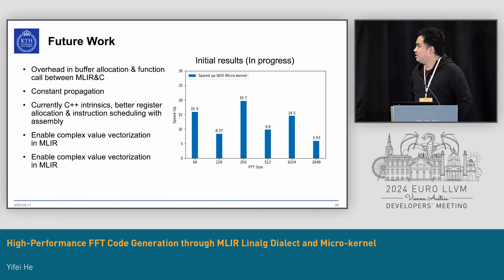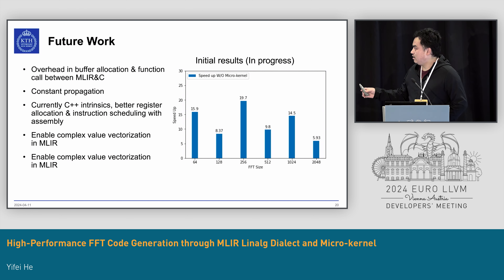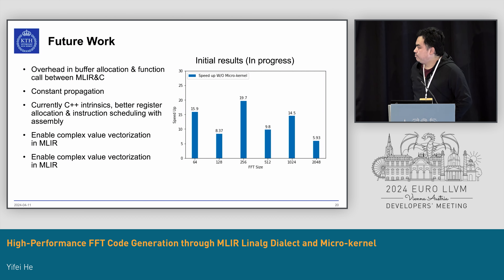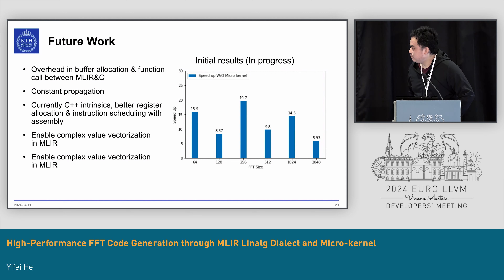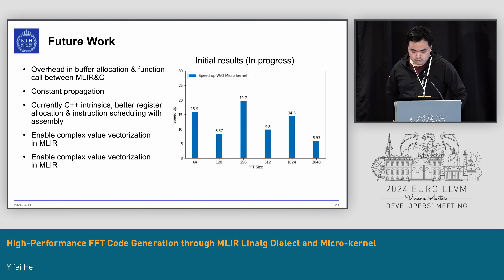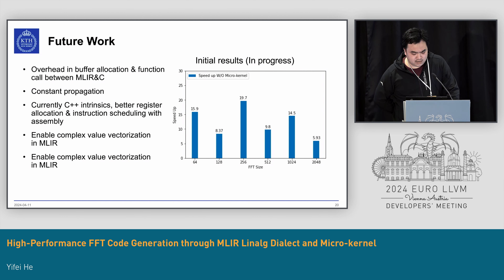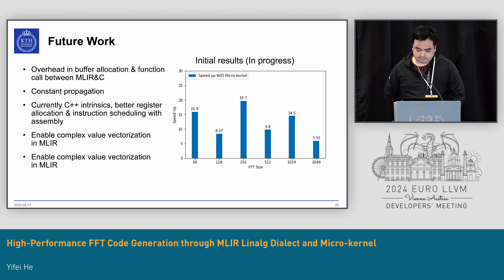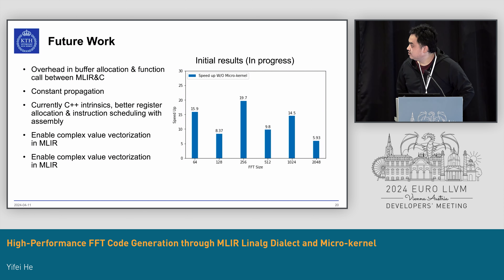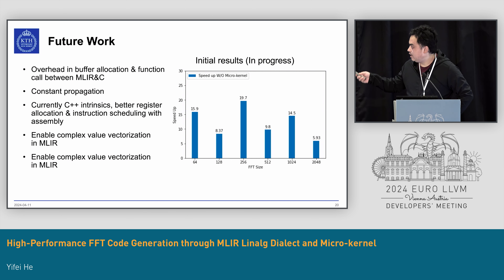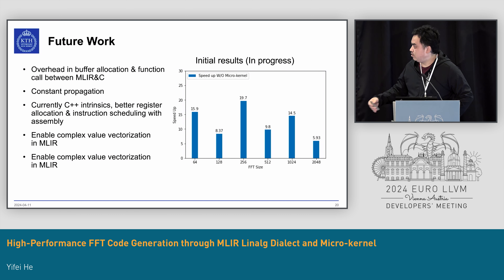This is work in progress, so we only have initial results. We didn't compare with other FFT libraries — we only compared our microkernel implementation with code generation without the microkernel, which went through the MLIR and LLVM vectorizer pipeline. We can see speedups over different sizes, and for some sizes it's over 10x. There is still a gap compared with state-of-the-art FFT libraries. We have found some overhead that hasn't been optimized yet, such as buffer allocation and function call overhead between MLIR and C, since the microkernels are implemented in C and called by MLIR.